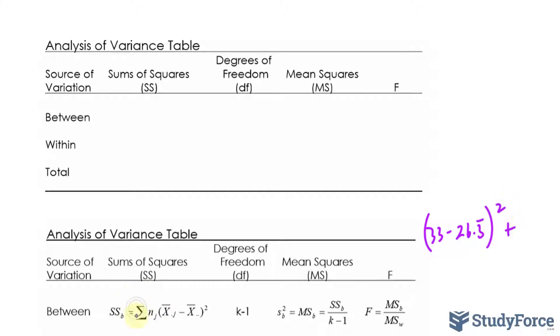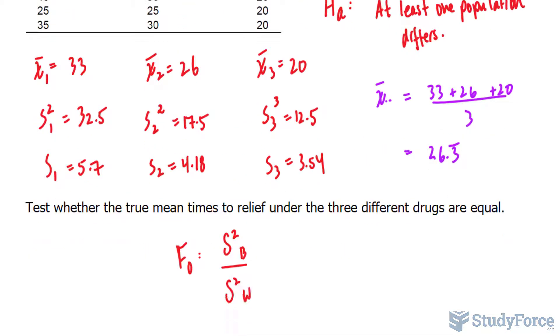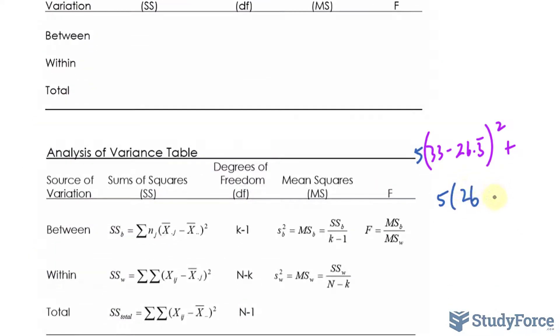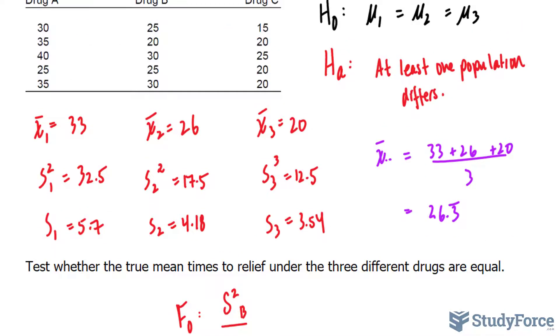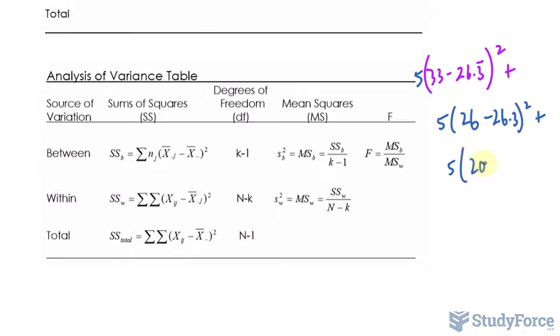Plus, we're taking the sum. And don't forget we have this letter N. That represents the number of individuals per each group. 5 plus, again, 5 bracket. That next was 26 minus 26.3 raised to the power of 2. Plus, again, 5. And finally, we had a mean of 20 minus 26.3 raised to the power of 2.